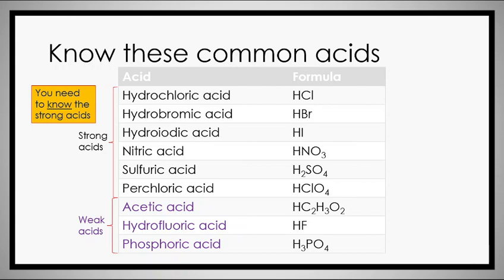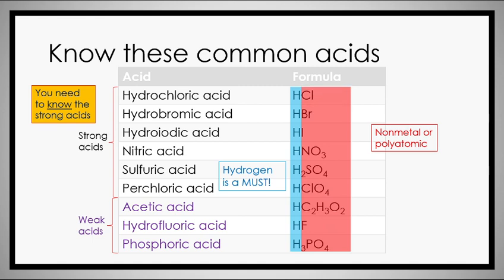By the loosest definition, all acids are going to split up into H+ ions and a non-metal or polyatomic ion on the other end. So one of the requirements is you need to have a hydrogen, and on the other side either a non-metal or a polyatomic ion. Of course they need to be aqueous.